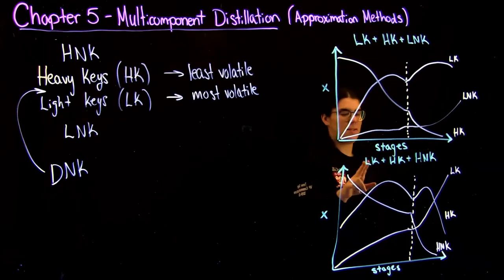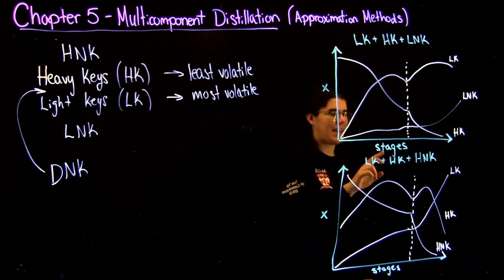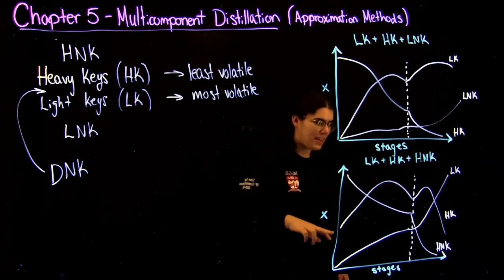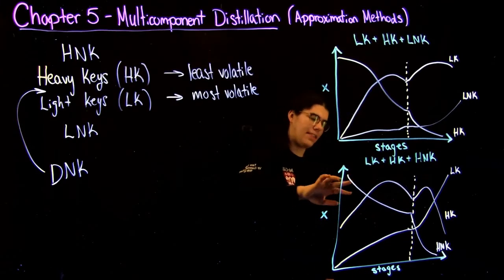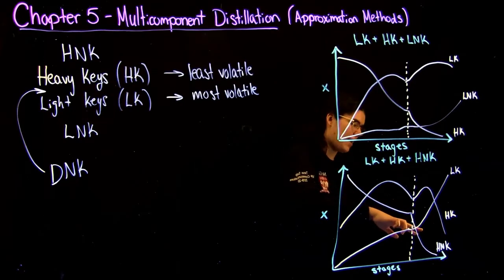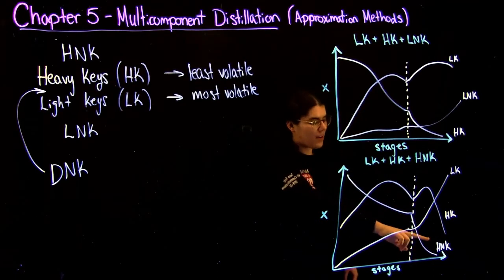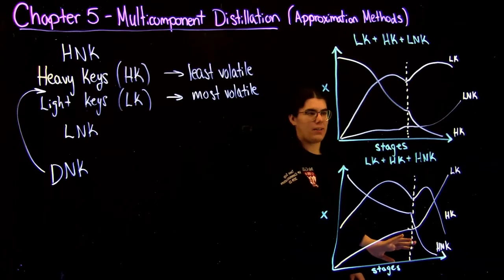The same is true for a system that would be made up of a light key, a heavy key, and a heavy non-key. So here you have the light key growing and growing, and then you have a similar distribution of the heavy keys and the heavy non-keys not coming out of the top of the column so much.